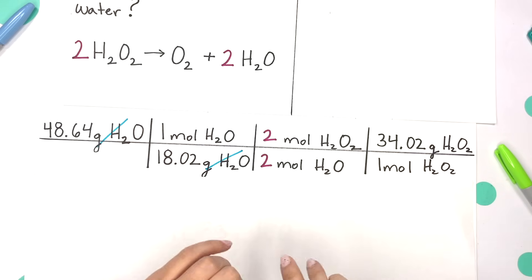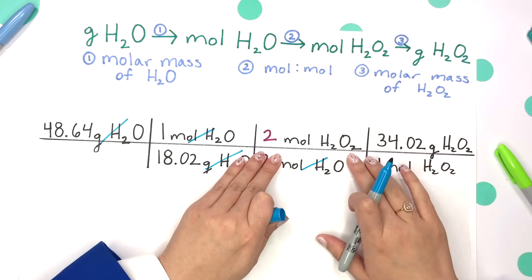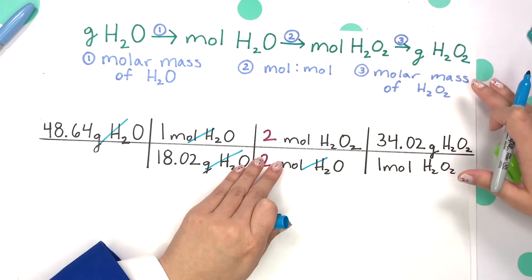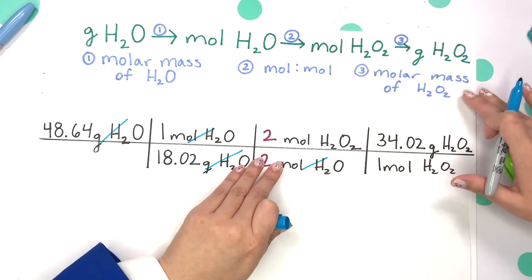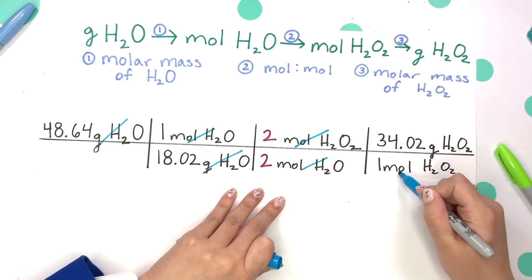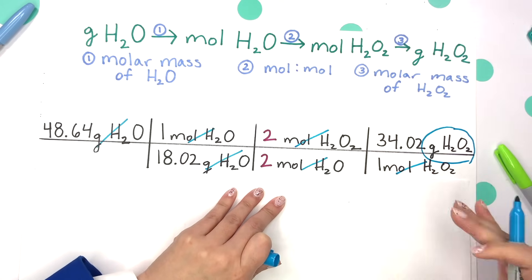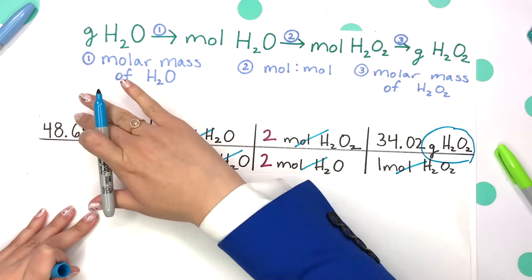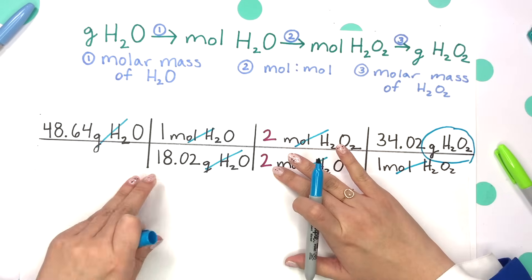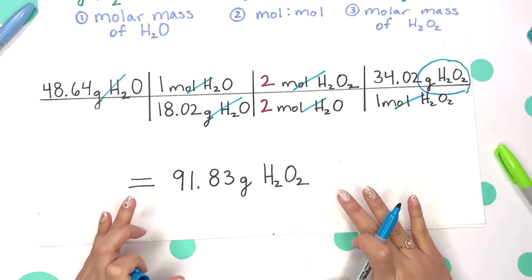We place two moles of water on the bottom so they cancel. Those moles of water cancel and we're at moles of hydrogen peroxide. From moles of hydrogen peroxide, we use our last conversion factor — the molar mass of hydrogen peroxide — to get to grams of hydrogen peroxide. Our moles cancel and we're left with just grams of hydrogen peroxide, which is what we're solving for. Multiply straight across, divide by 18.02 times two, and you get 91.83 grams of hydrogen peroxide.